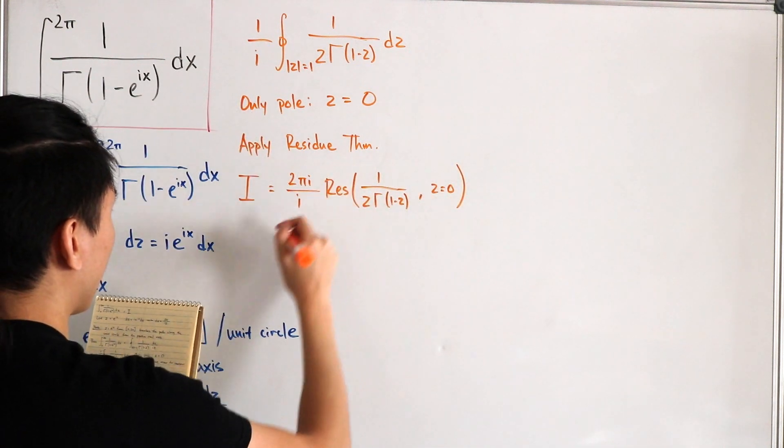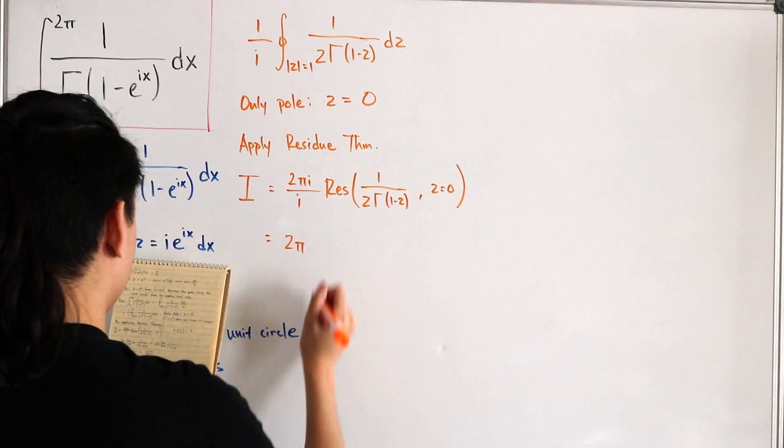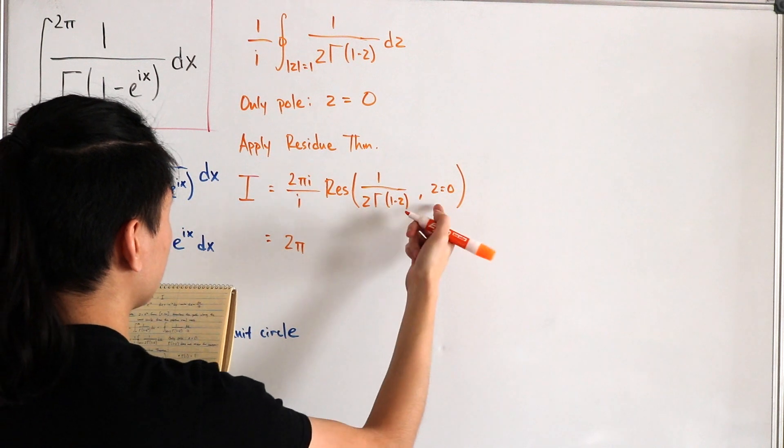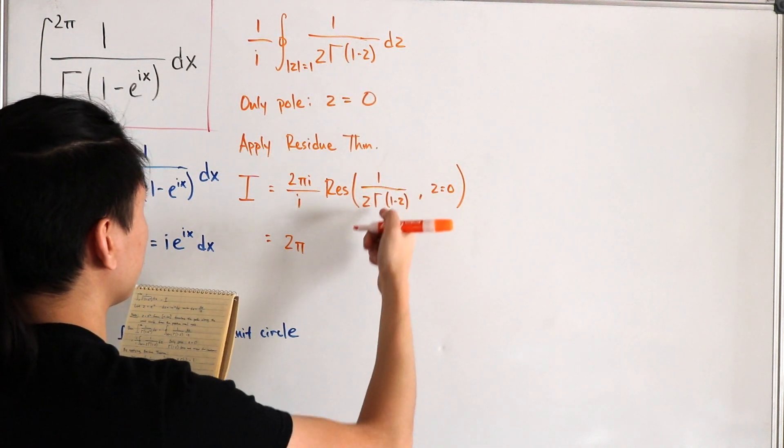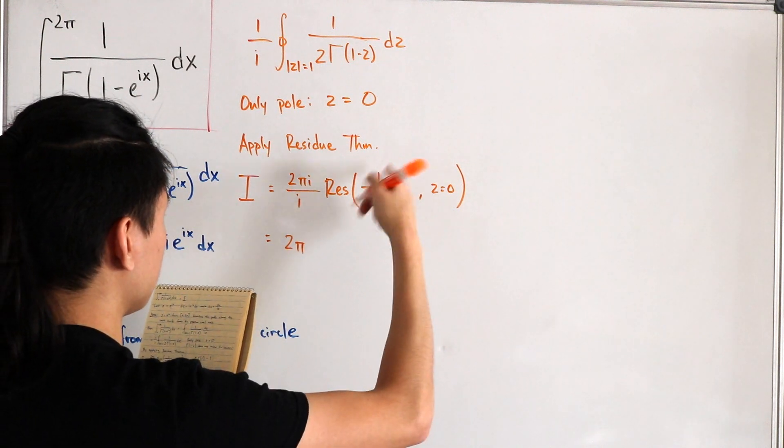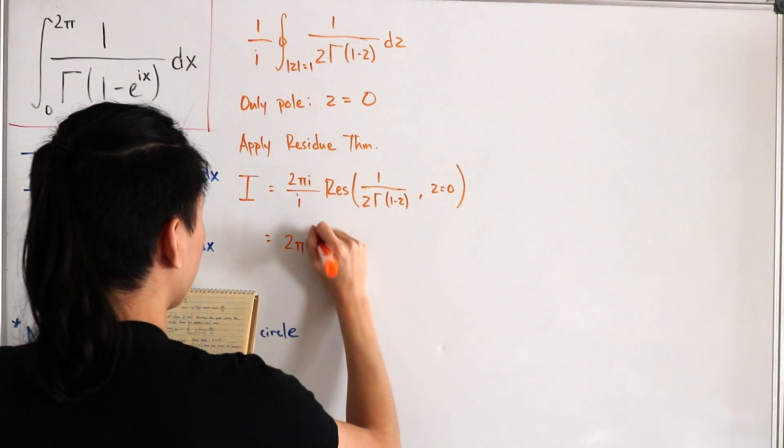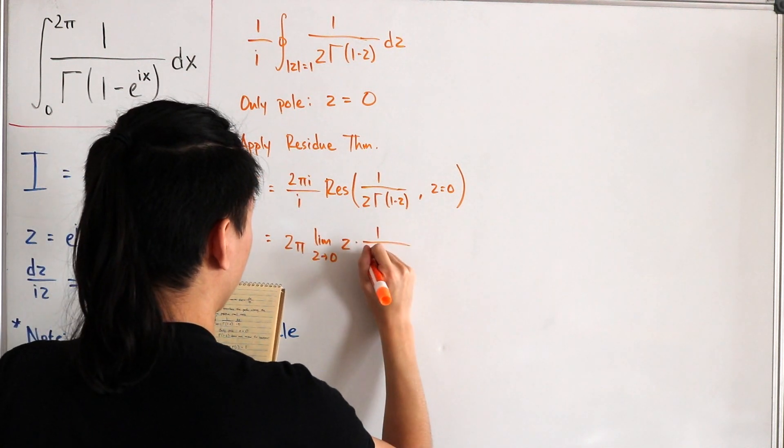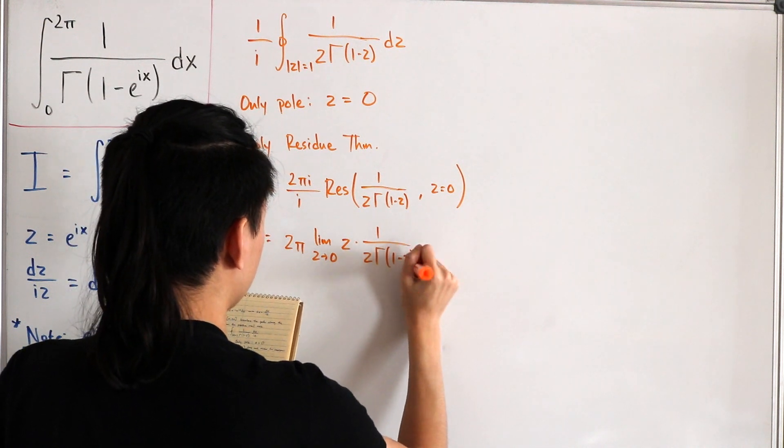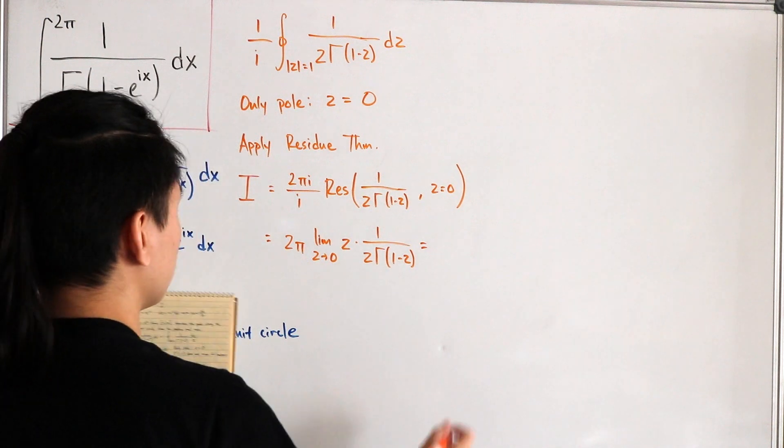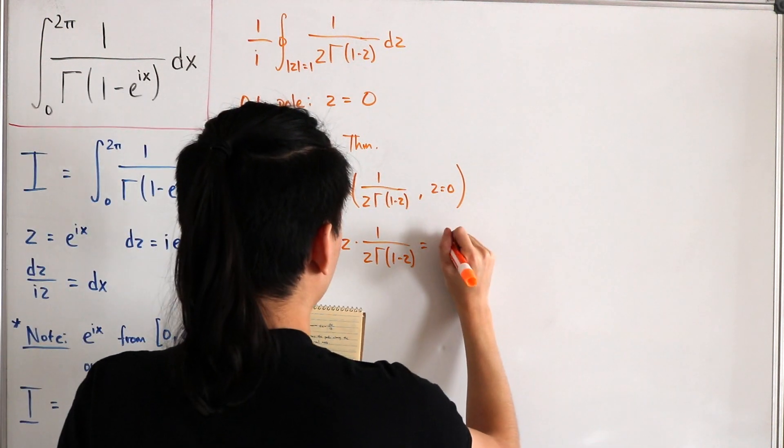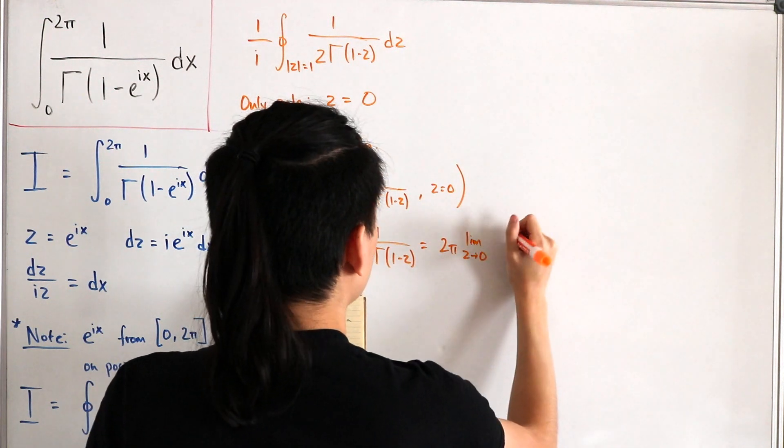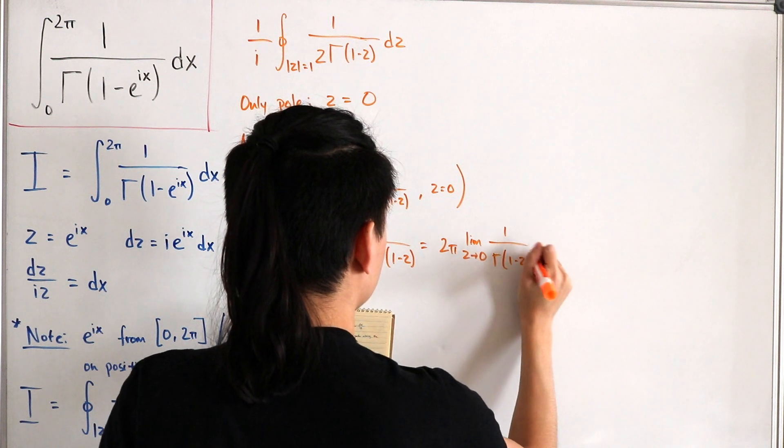And now if we do this, all the i's would cancel, so we have 2π, then that means calculating the residue means you're taking the limit of your function at the pole z equals zero. Multiply that with your f of z function for this case, so that way the z's will cancel from both the top and bottom. The limit z approaches zero of z, then times one divided by z times gamma of one minus z. Then see that this is just equal to 2π, then times the limit as z approaches zero of one divided by gamma of one minus z.